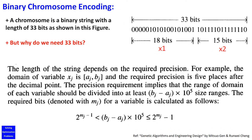A chromosome is a binary string with a length of 33 bits, as shown in this figure. But do you know why we need 33 bits?